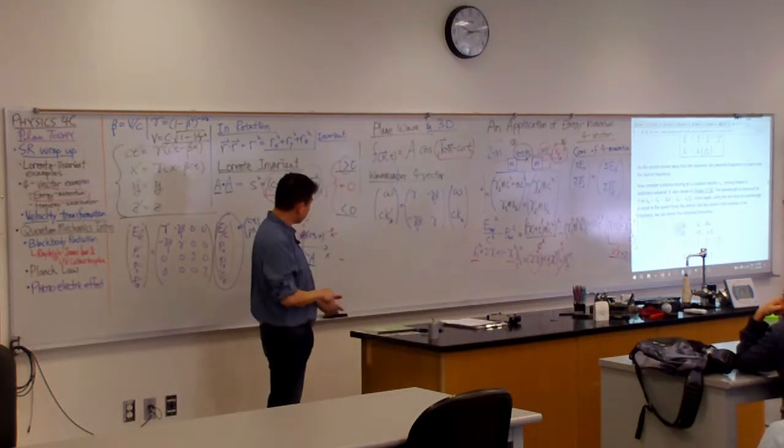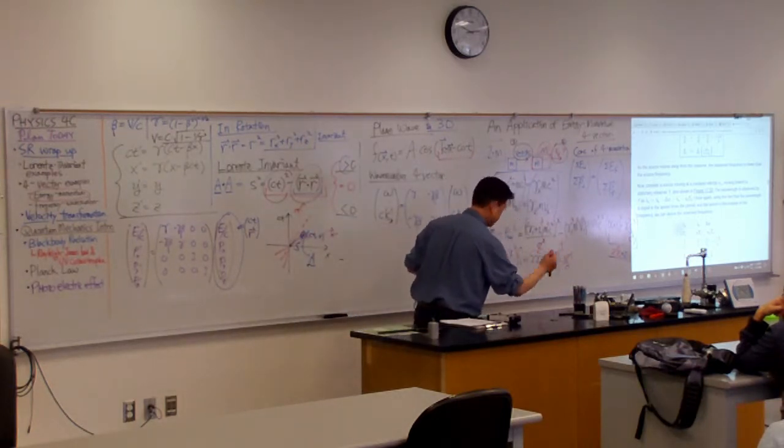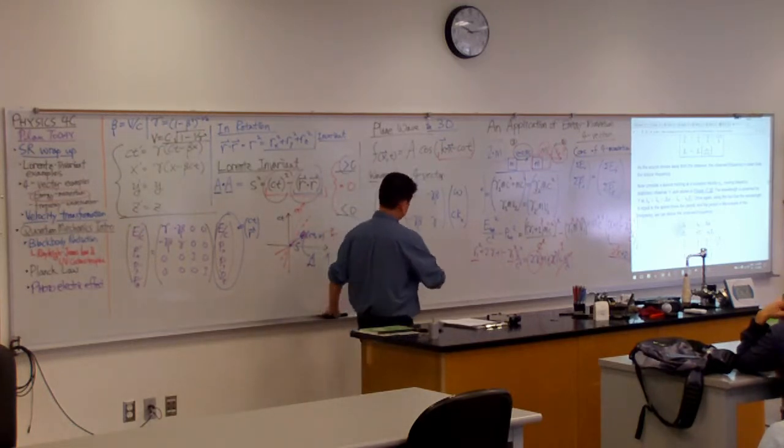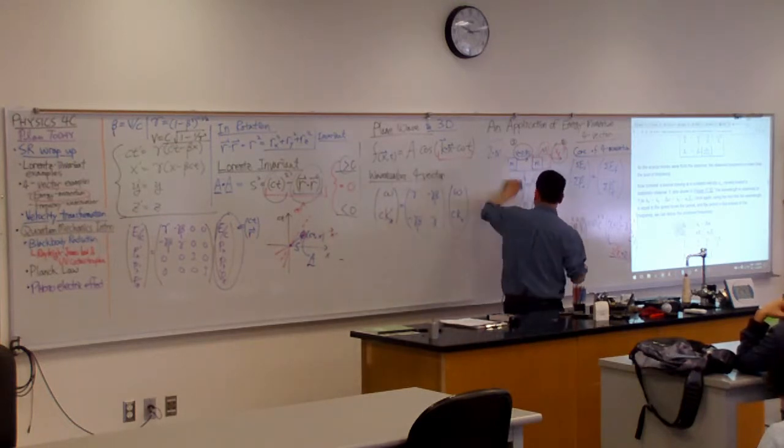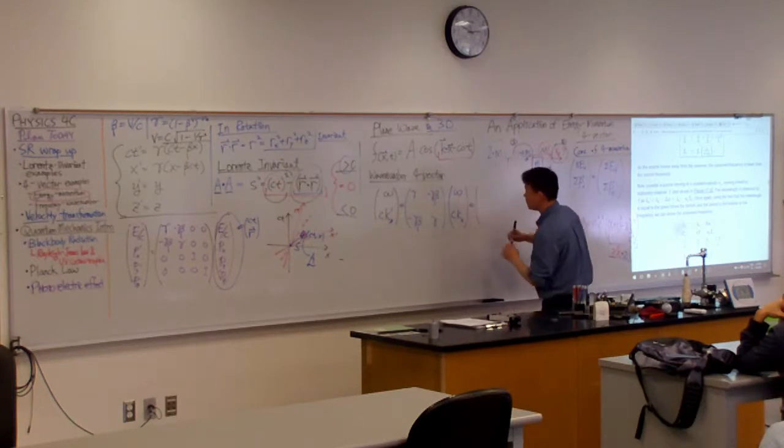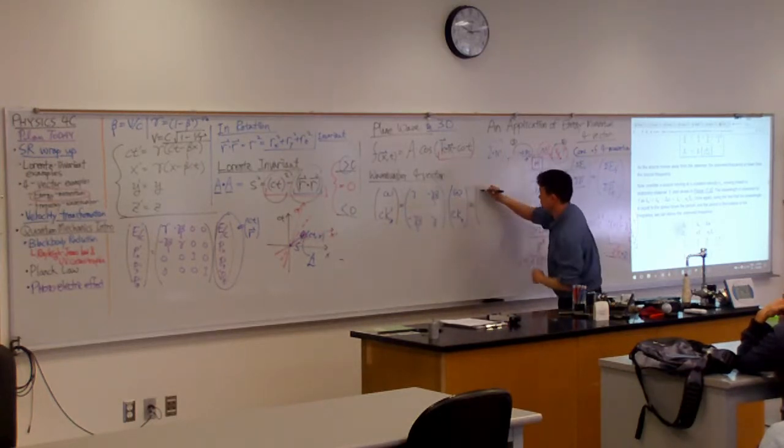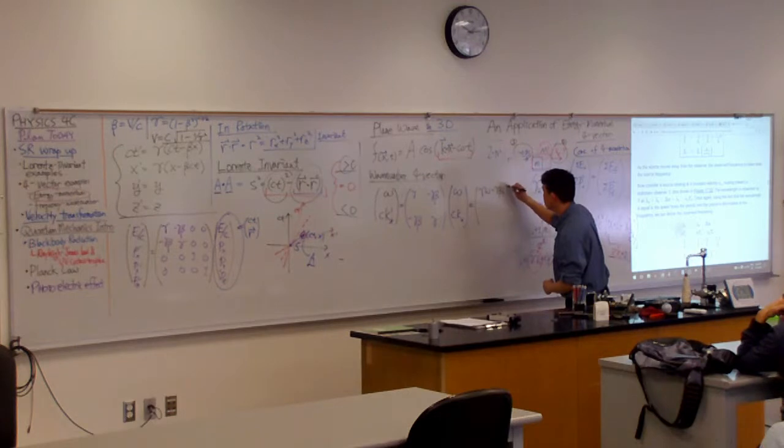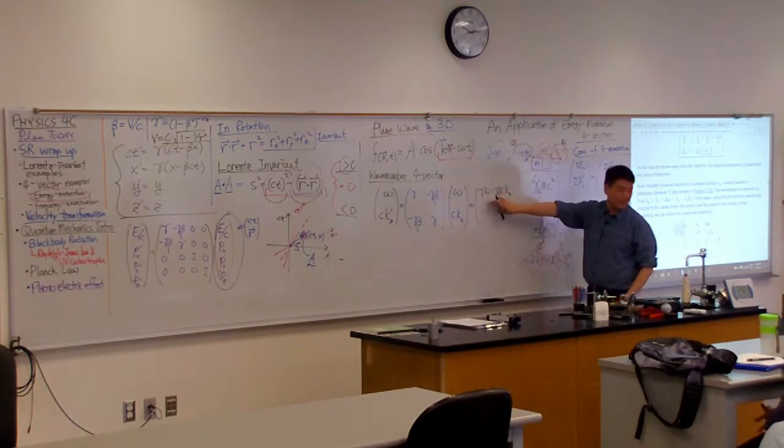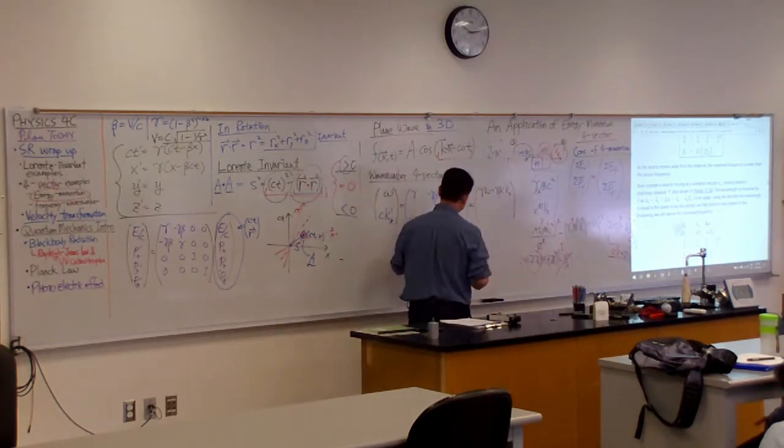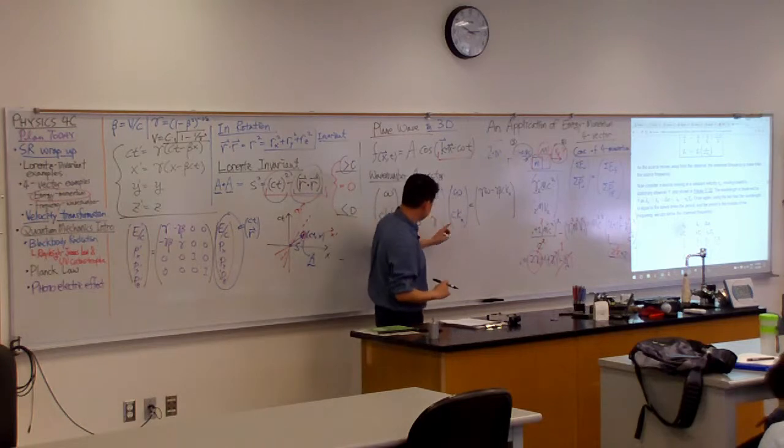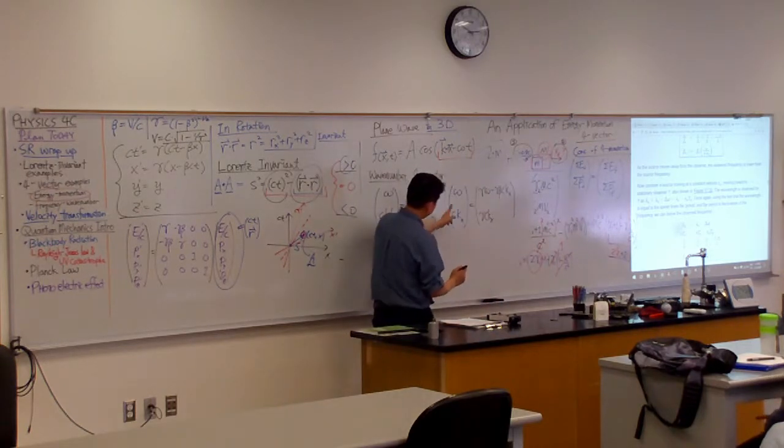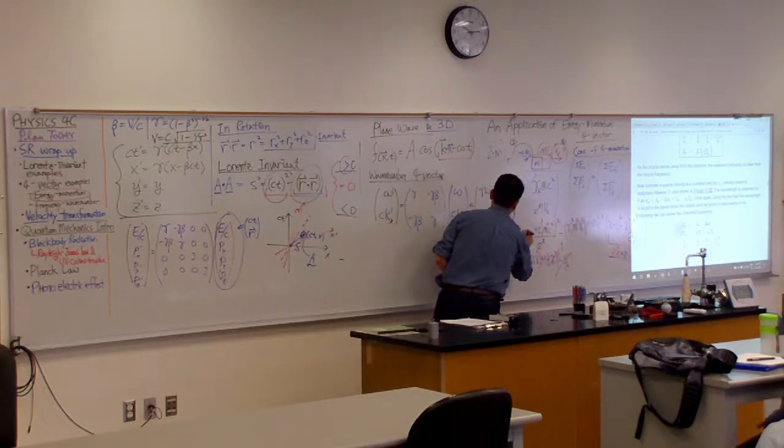So this would be gamma minus gamma beta, minus gamma beta gamma. All right, let's write it out and see. So I do the matrix product. People here remember how to do matrix product? Yes? Okay, so let me actually erase this and do the product here. So then my first component is gamma omega minus gamma beta c k_x. And I guess that's actually all I need, but let me do the second one just so I have it. Second one is gamma c k_x minus gamma beta omega.